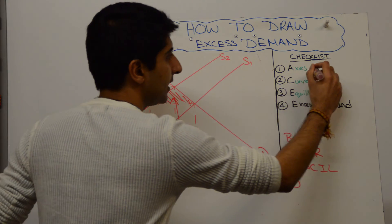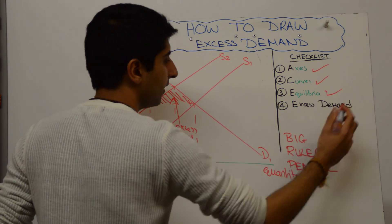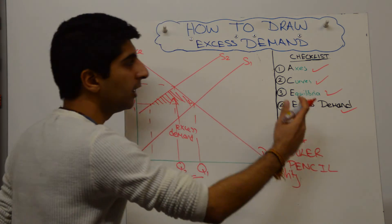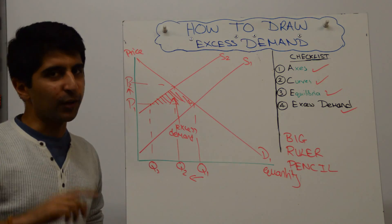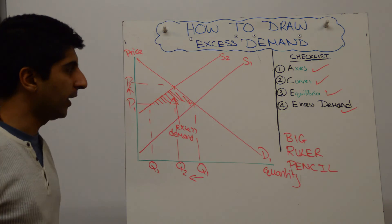Have we labeled our axis? Yeah. Have we labeled all our curves? Yeah. Have we labeled our equilibria? Yes. Have we labeled the excess demand? Yes, we have. This might seem pedantic, but you've got to do it. It's so easy to make a mistake. You've got to keep this checklist in your head.